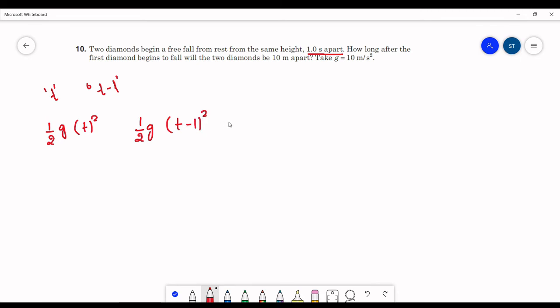The difference between them is 10 meters. So this g will get cancelled out. So here t square minus t minus one whole square equals to two.